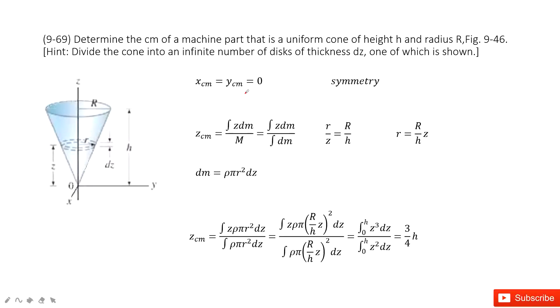Welcome to my channel. I'm Zhang Zingqi. Let's look at problem 69 in chapter 9. In this one, we need to find the center of mass for a uniform cone. And you can see we have R as the radius, H as the height. How can you do that?